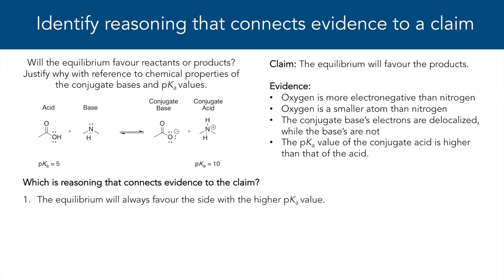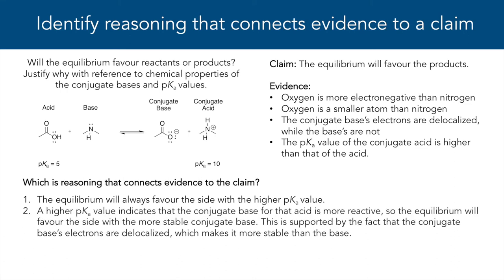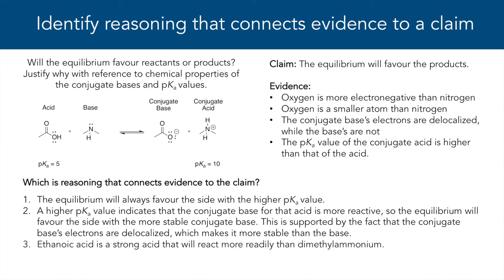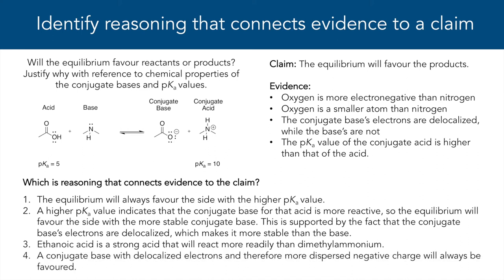Option 1: the equilibrium will always favor the side of the higher pKa value. Option 2: a higher pKa value indicates that the conjugate base for that acid is more stable, so the equilibrium will favor the side of the more stable conjugate base — this is supported by the fact that the conjugate base's electrons are delocalized, which makes it more stable than the base. Option 3: ethanoic acid is a strong acid that will react more readily than dimethyl ammonium. Option 4: a conjugate base with delocalized electrons, and therefore a more dispersed negative charge, will always be favored.